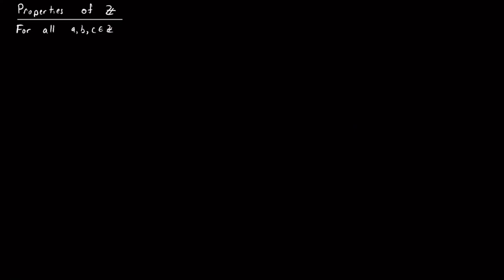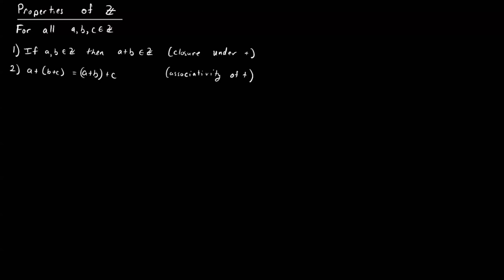First, we'll recall some properties about Z and give them names. The first property is closure under addition: if I take any two integers and add them together, I produce another integer. The second property is associativity of addition: a plus (b plus c) is the same as (a plus b) plus c. Another property is commutativity: a plus b is always the same as b plus a.